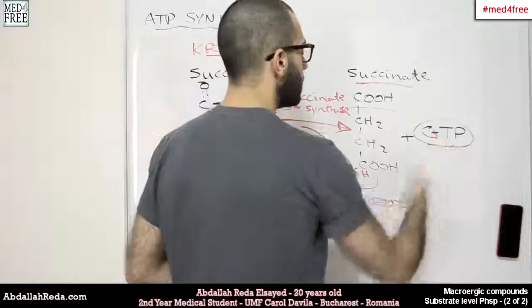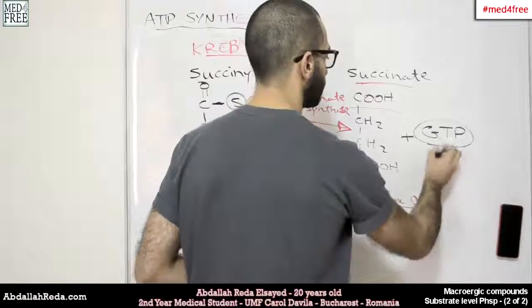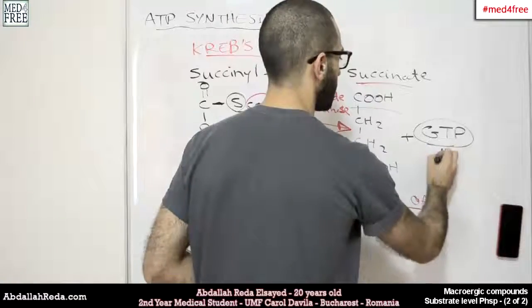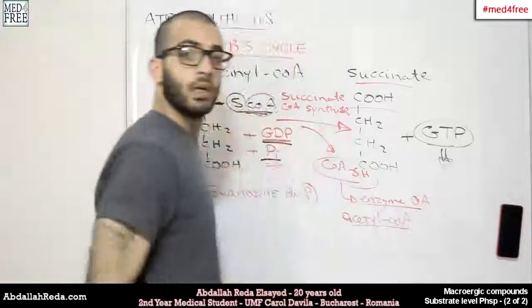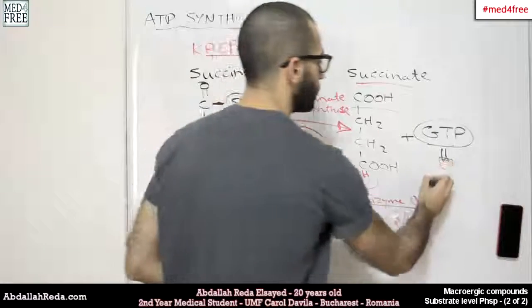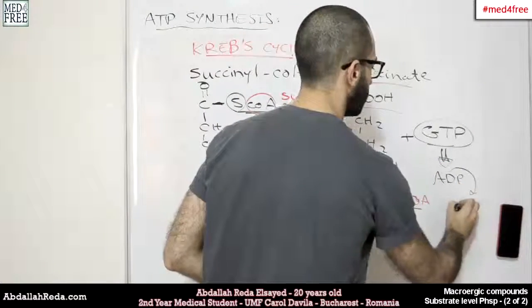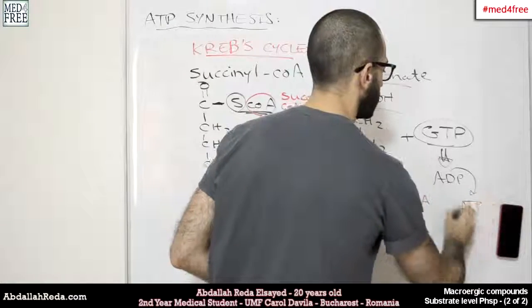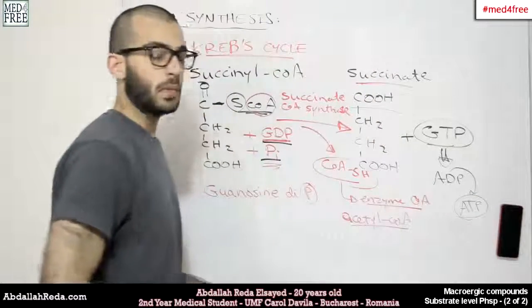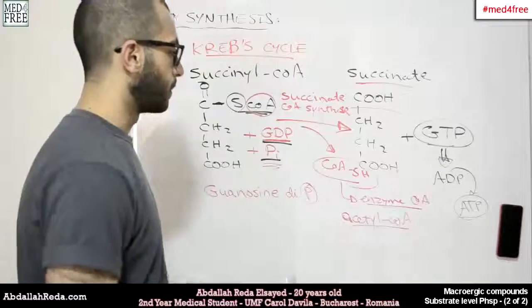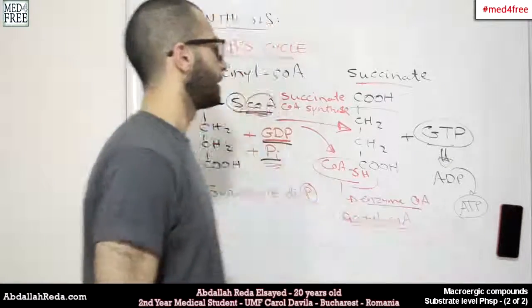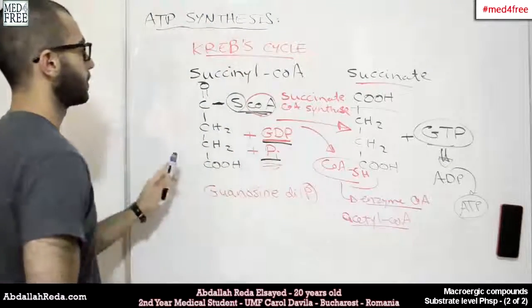The thing is that GTP can add this extra phosphoric acid group that it gained here to an ADP molecule, changing it into ATP. This is the point. This is how the ATP is synthesized throughout this reaction.